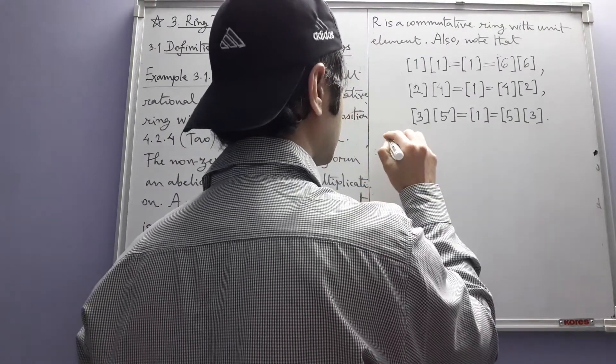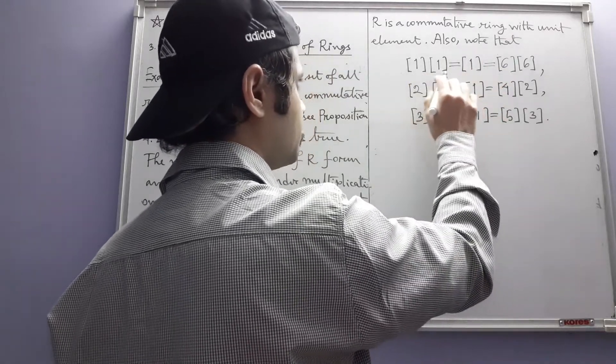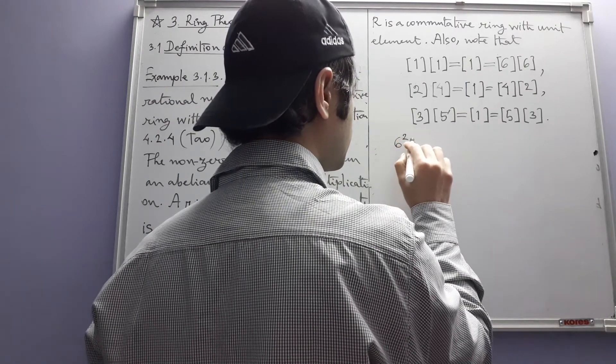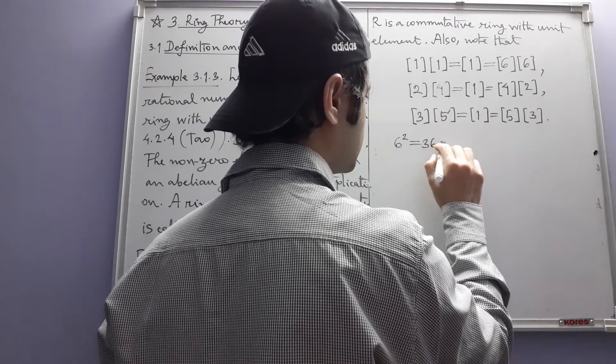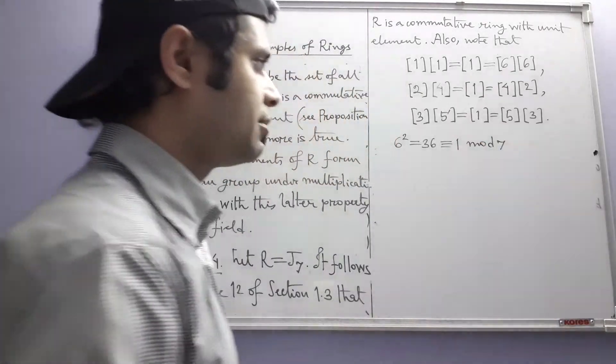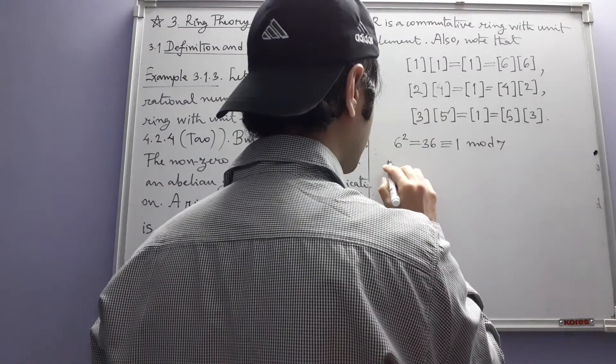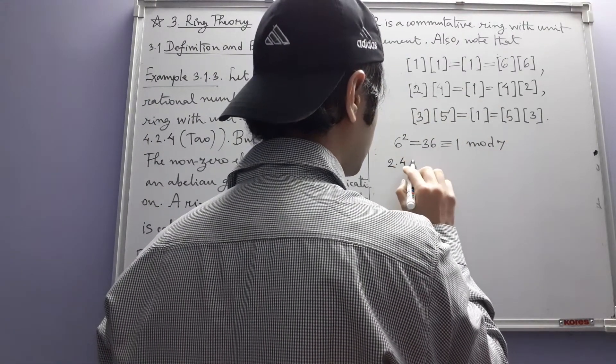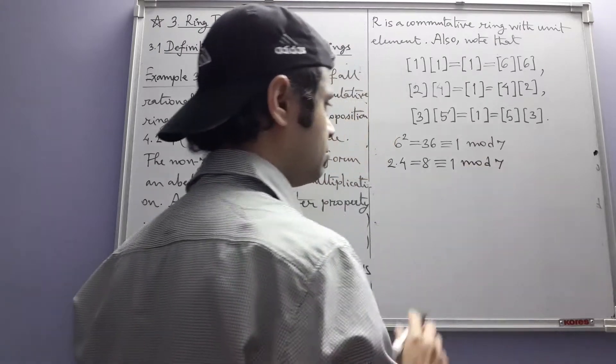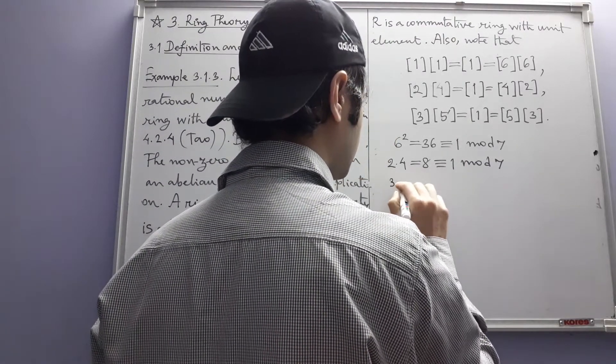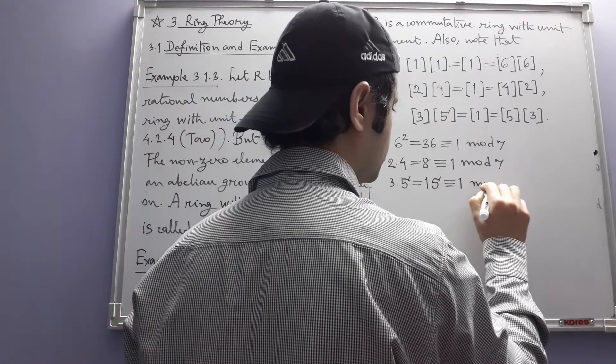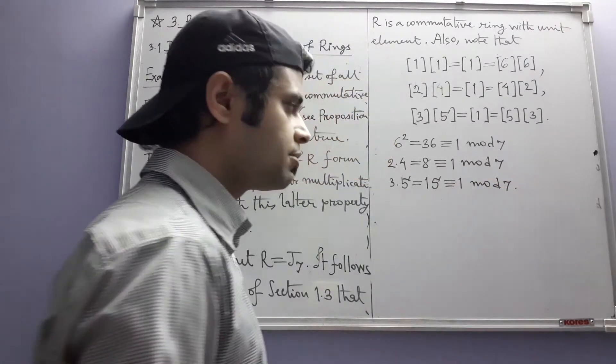The first one of course need not be checked because it's very easy, one times one is one. The second one comes from this: 6 squared is 36, so this is congruent to 1 mod 7 because 35 is divisible by 7. 2 times 4 is 8, this is also congruent to 1 mod 7 because 8 minus 1 is 7. Like that, 3 times 5 is 15, this is also congruent to 1 mod 7. 7 divides 15 minus 1 which is 14.